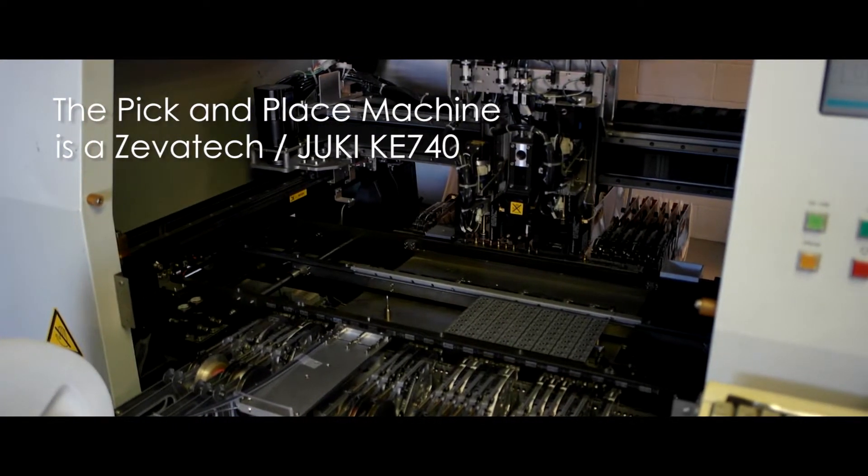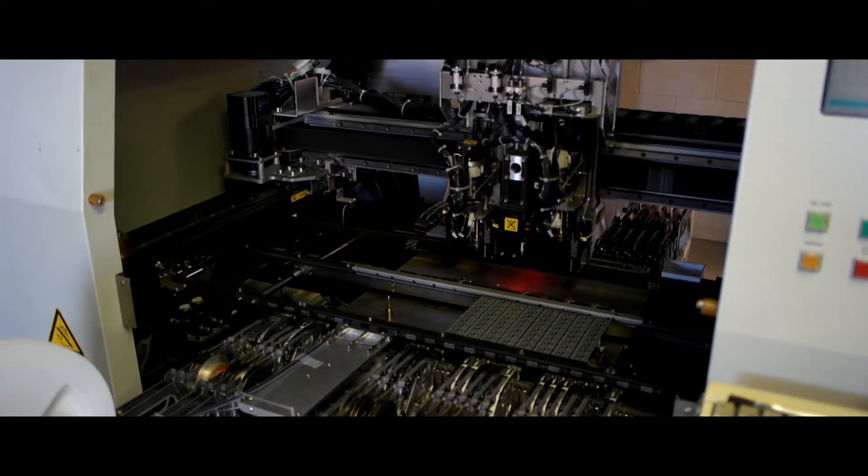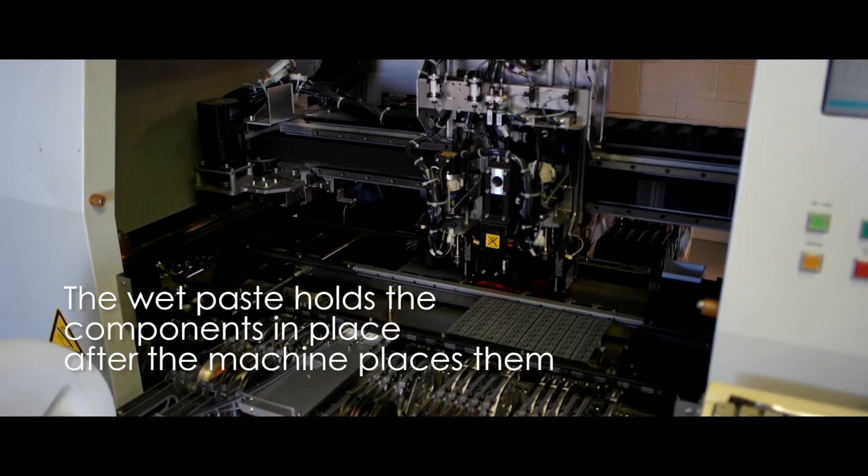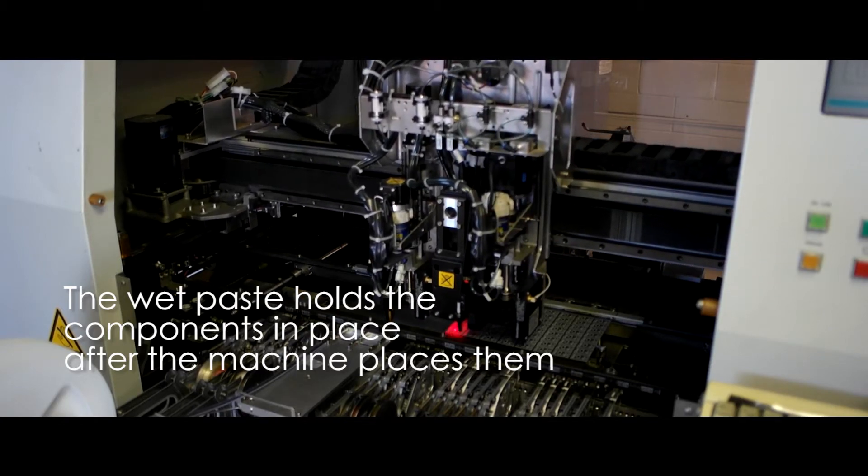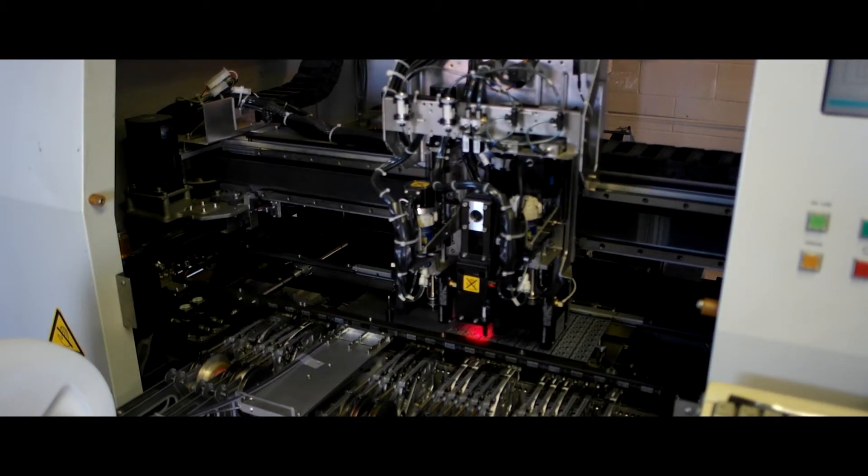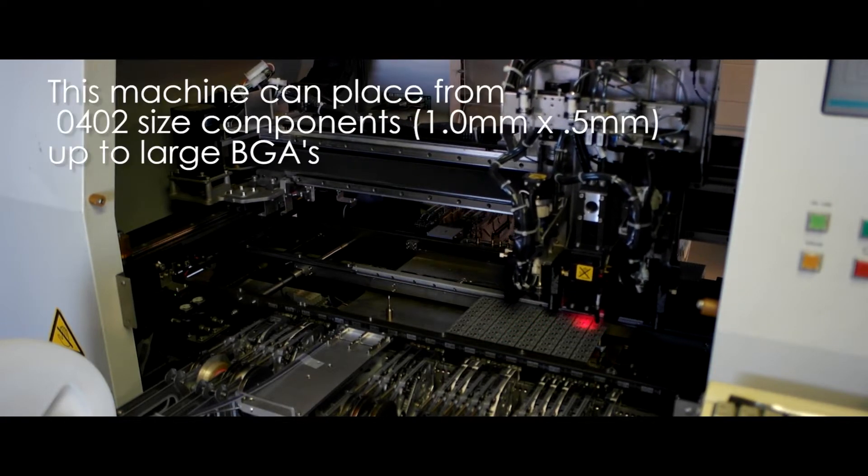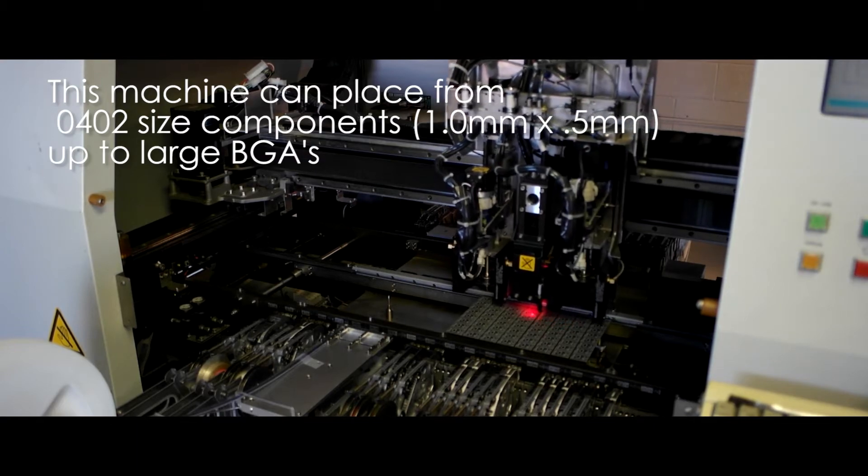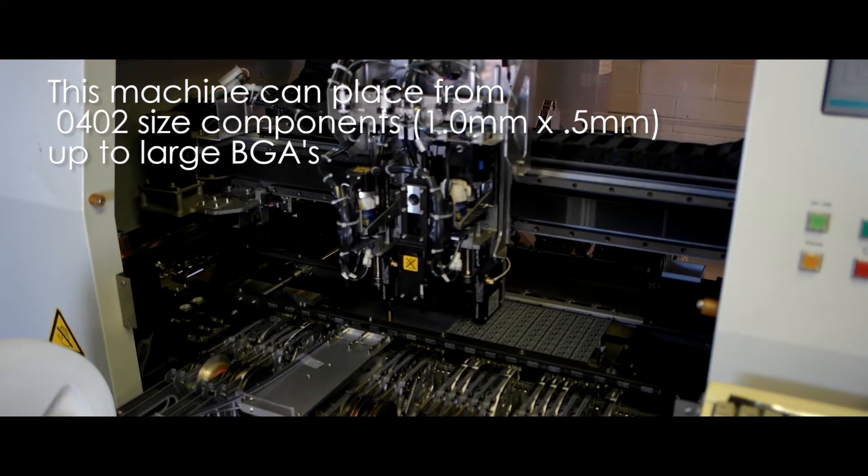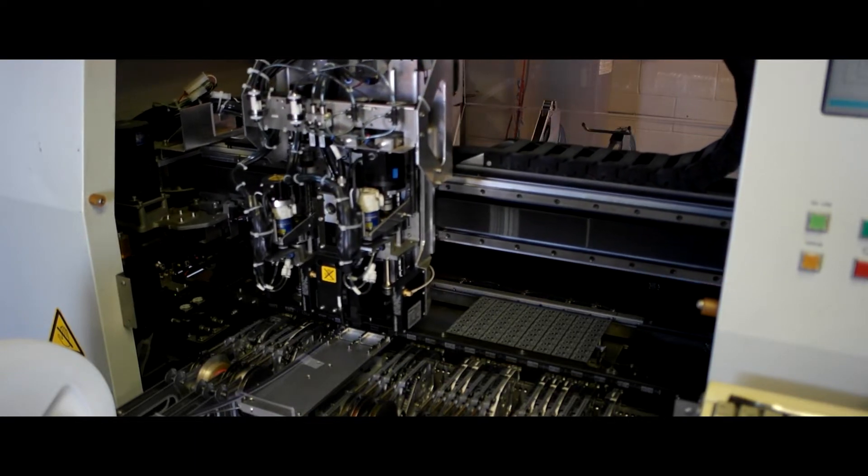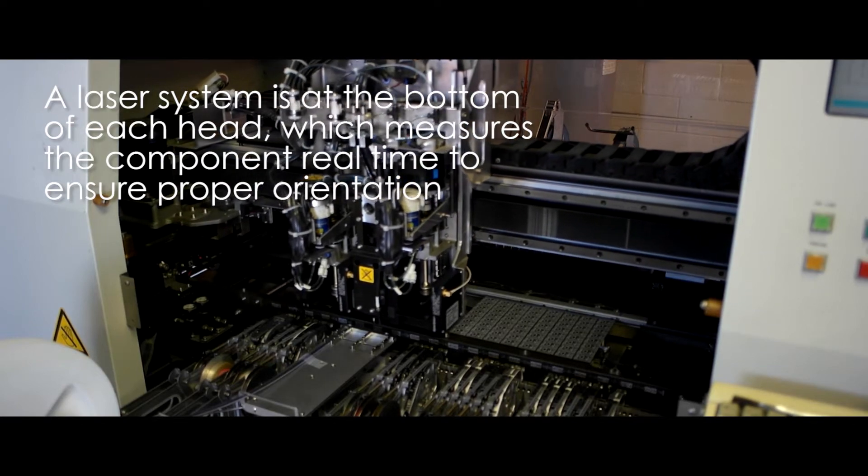This pick and place machine uses pneumatic pressure to place all the parts. You can see that red light there. That's actually a vision system. It's going to look at a reference point on the board called a fiducial, and then a second reference point. Using those two points it'll correct for any errors with the board loading. You might not be able to hear it but there's air being sucked through that nozzle. It's going to come over and pick up a part and then place it on the board.